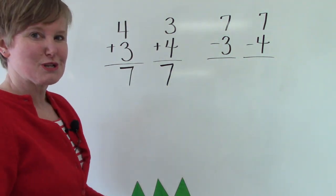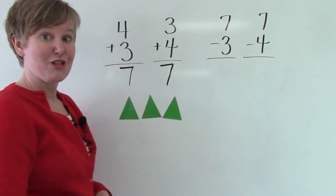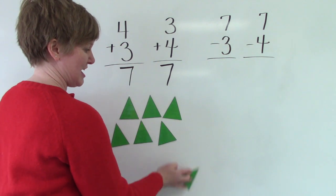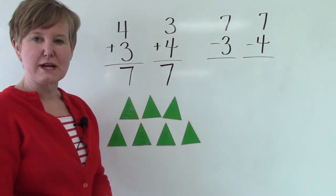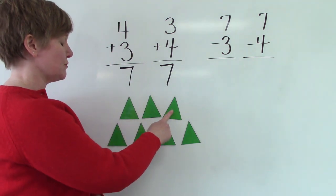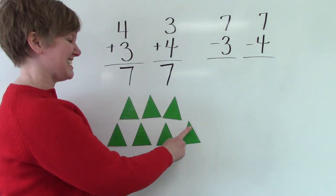I'm going to show you some shapes again. Here we have 3 triangles and 4 triangles. 3 plus 4 is 7. Let's just count it to make sure. 1, 2, 3, 4, 5, 6, 7.